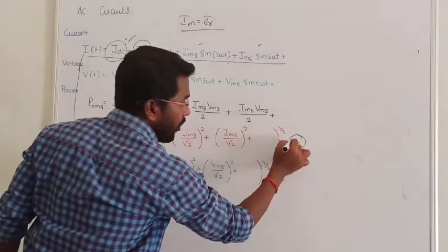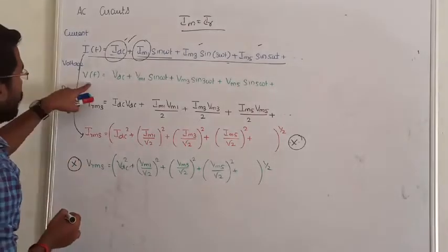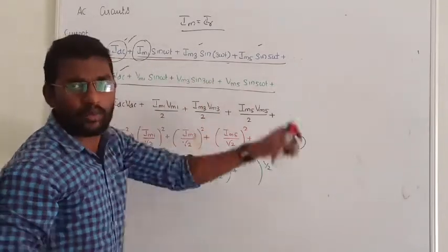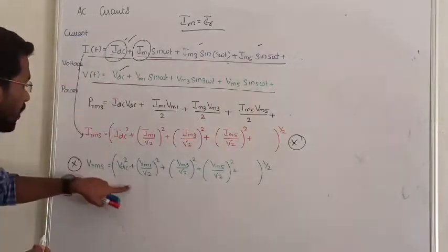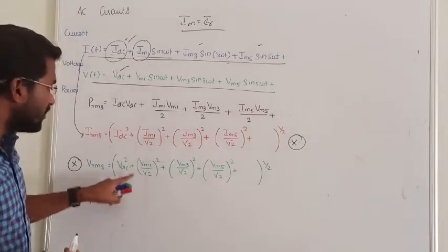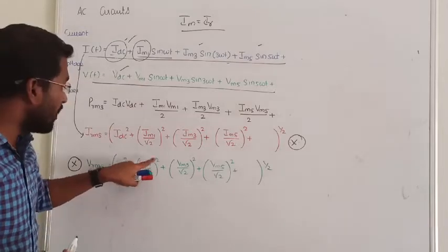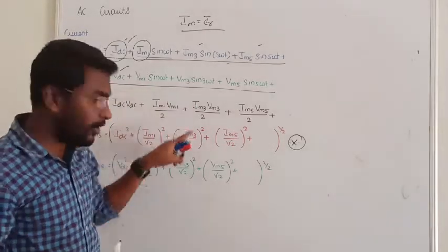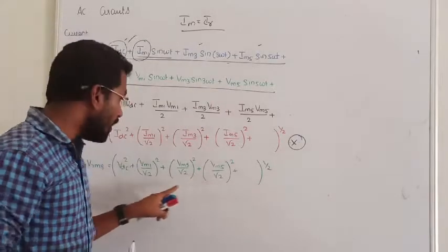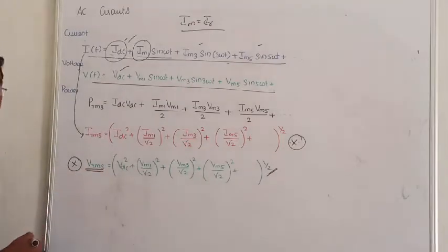Very important. Now for voltage: V_RMS = sqrt( V_DC² + (V_MAX1/√2)² + (V_MAX3/√2)² + ... ). Keep all terms under the root. That is how we obtain the total RMS voltage. Similarly, we calculate total RMS power.